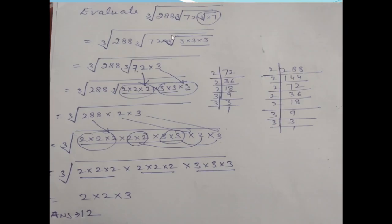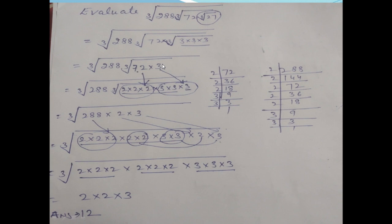This is another different type of question: cube root of 288, then cube root of 72, then cube root of 27. First, solve cube root of 27 — it equals 3, using prime factors 3 × 3 × 3. Then 72 is multiplied by this 3. Now find the cube root of 72. Find its prime factors and write them in cube root form. You have one group of 2s and one group of 3s.